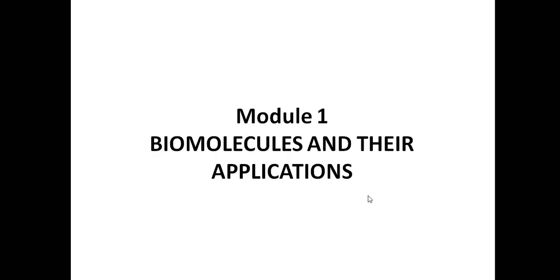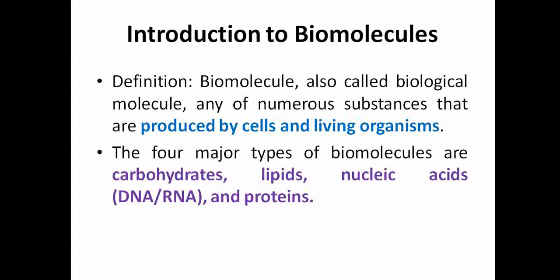Hello everyone, today we are going to discuss Module 1 of Biology for Engineers. Module 1 speaks about biomolecules and their applications. You might have heard about molecules — the difference is that biomolecules should be produced by cells or have some living property, like DNA which contains genes that can be carried forward. A biomolecule, also called a biological molecule, is any of numerous substances produced by cells and living organisms.